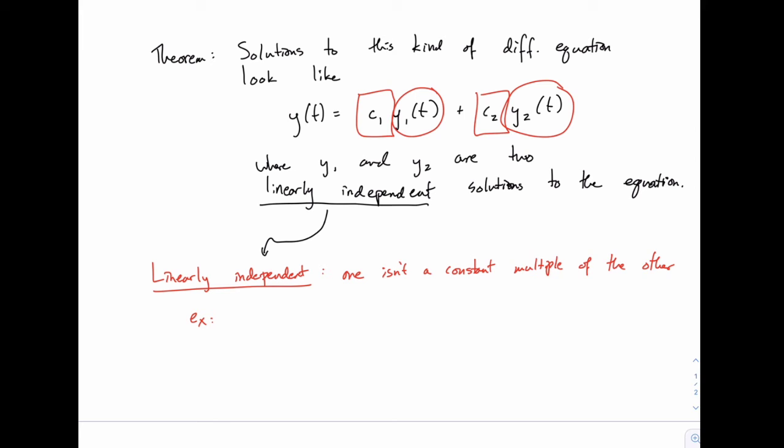These C1 and C2 are just like the arbitrary constants we've run across before, and given initial conditions, we can solve for those just like we've done in the past. So we've actually seen answers like this early on, and we solved for those constants already, and we'll see that again here.